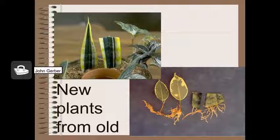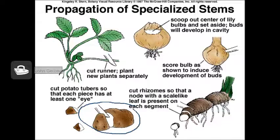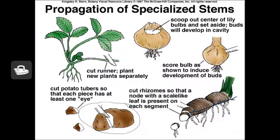If you have your own houseplants, you're going to want to make new plants from old to give to your family and friends. Other plants you can propagate using stems — remember that the potato is an underground stem, and if you cut the potato make sure there's an eye in each section and you can propagate the potato. Some plants have rhizomes, underground stems that can be used for propagation. Strawberries have runners that grow above ground that you can cut off and make new plants from.